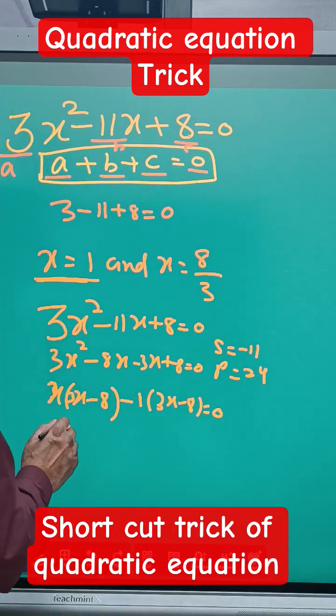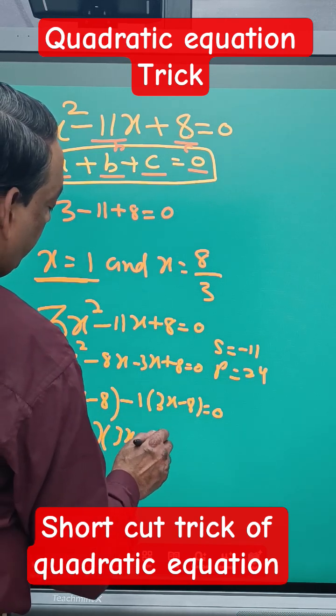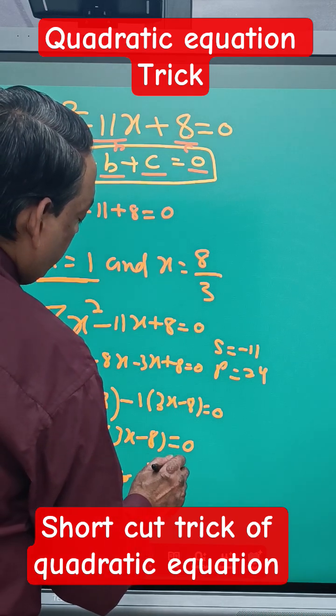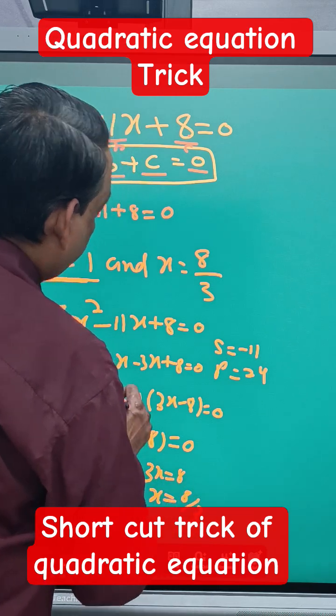So (x - 1)(3x - 8) = 0, which means x = 1 or 3x = 8, which is x = 8/3.